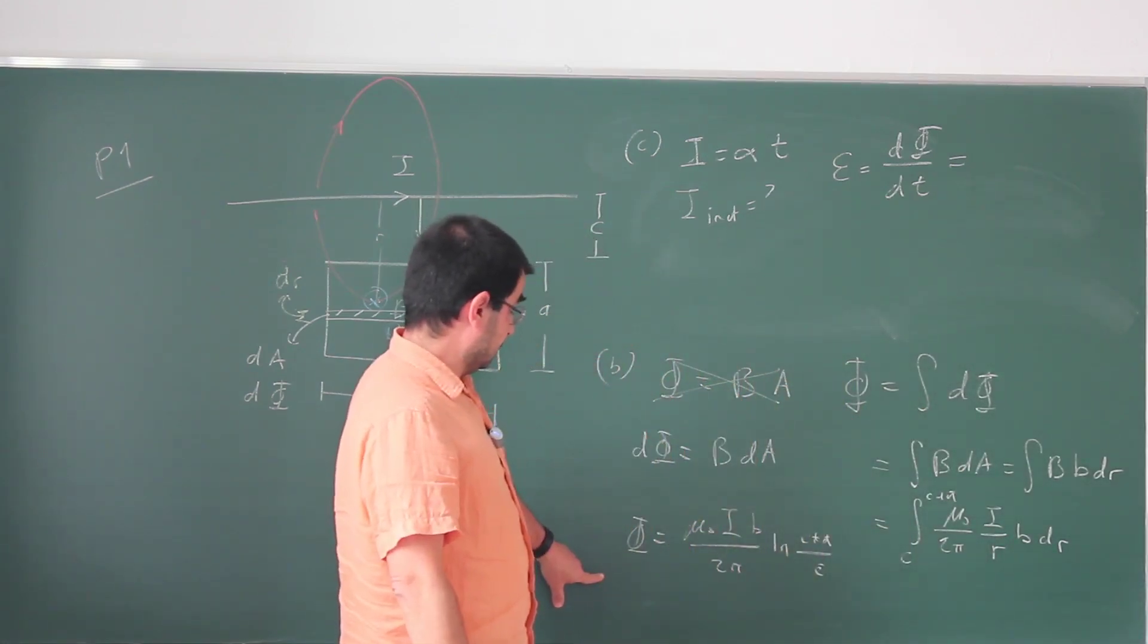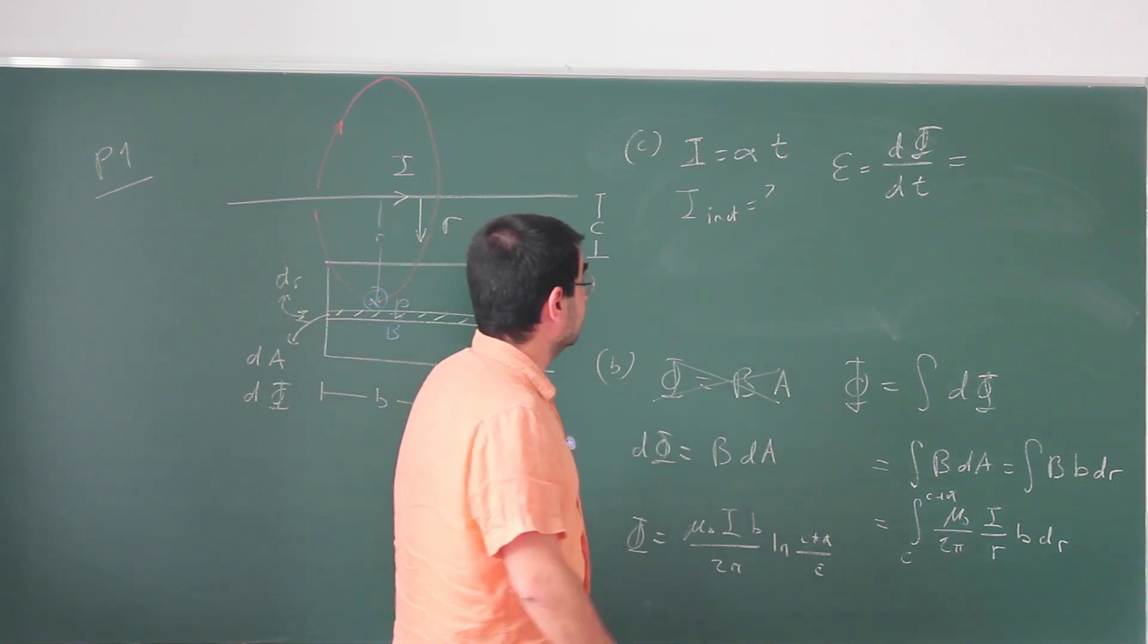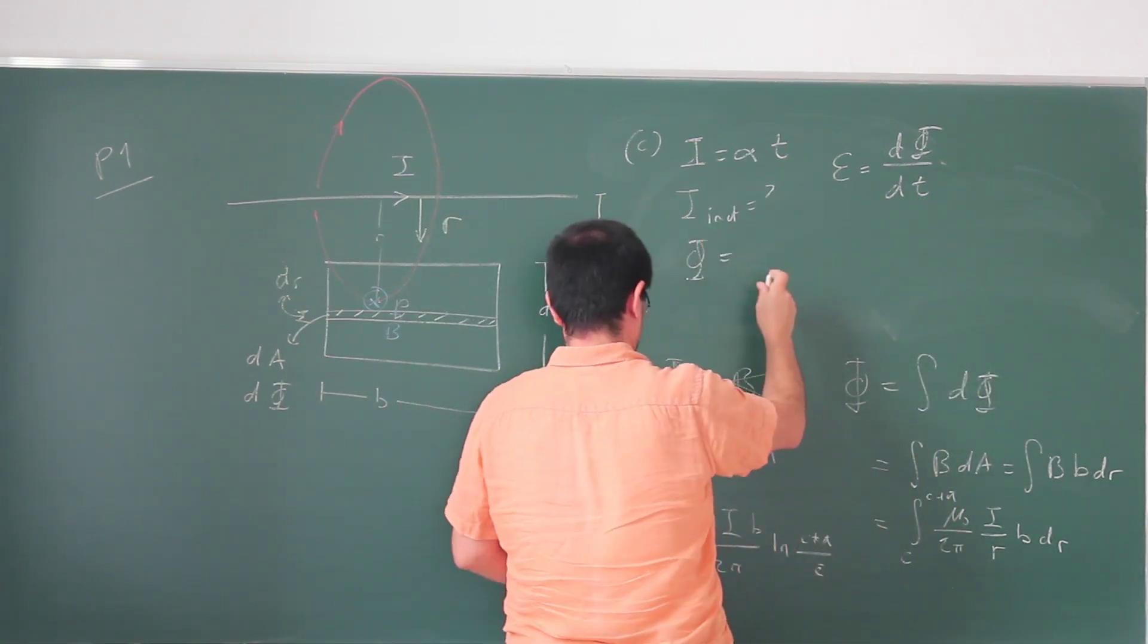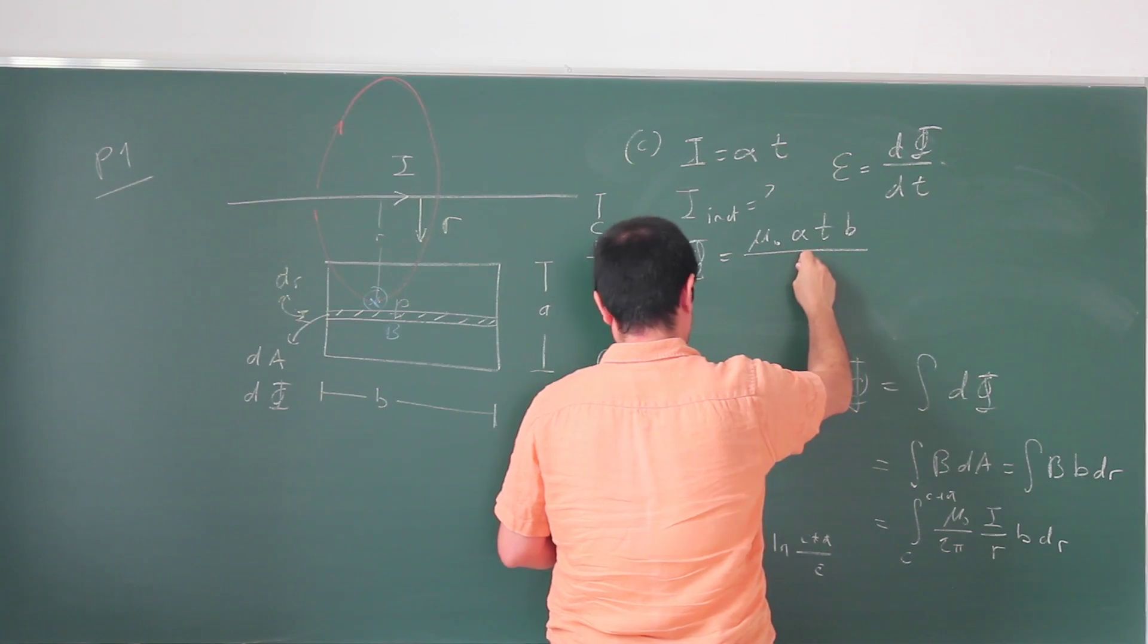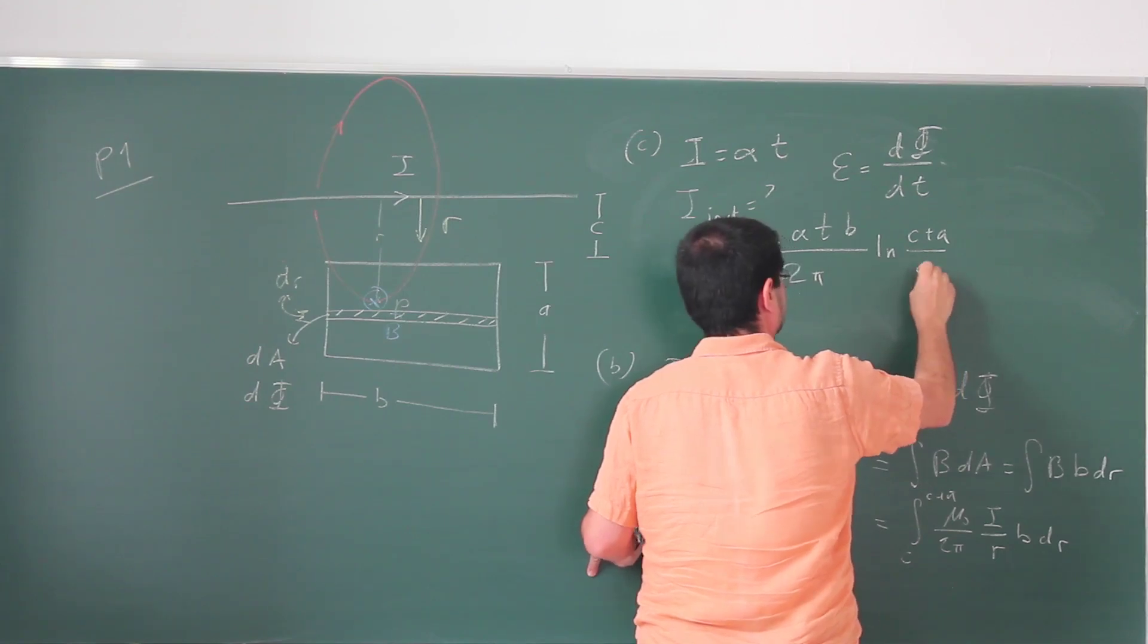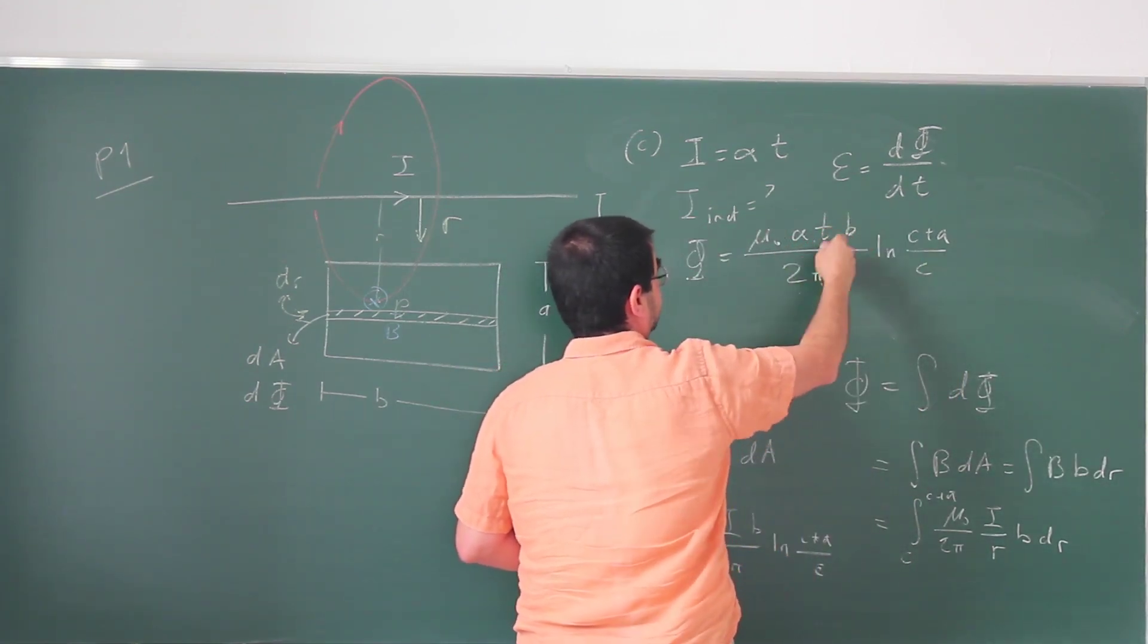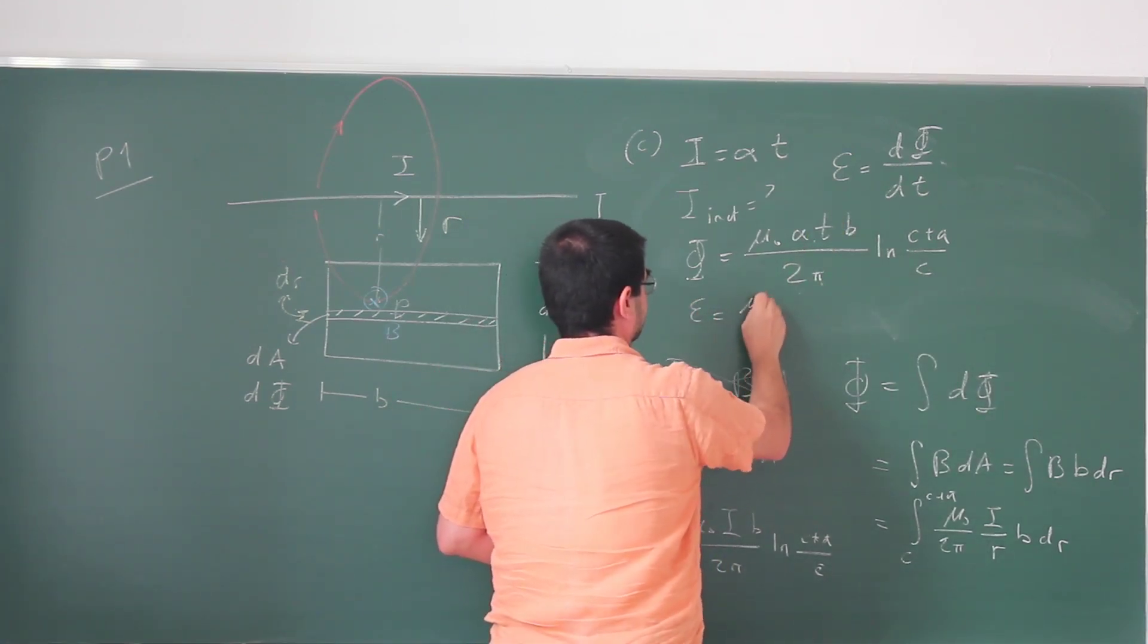d phi dt is this here except now I is alpha times t. So if phi is equal to mu naught alpha times t B over 2 pi ln (c plus a) over c, then the EMF is just going to be the time derivative of this, which just kills the t.